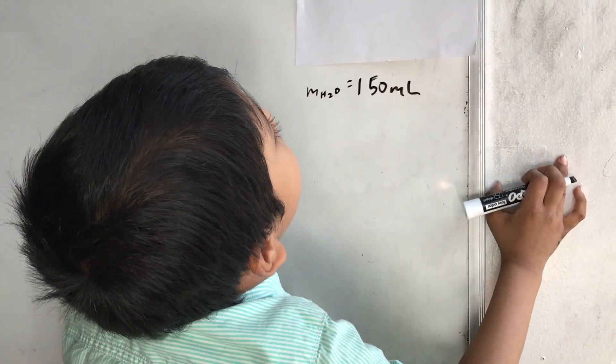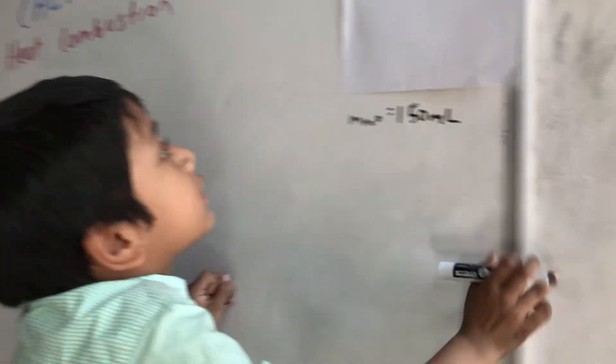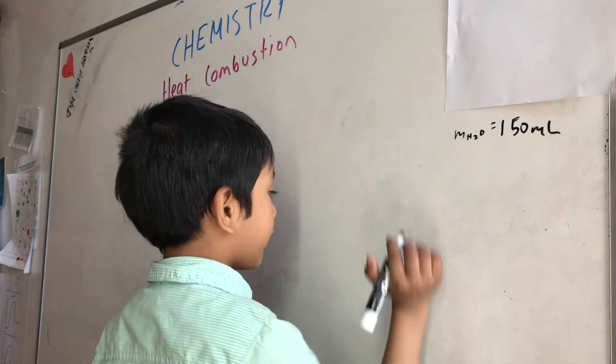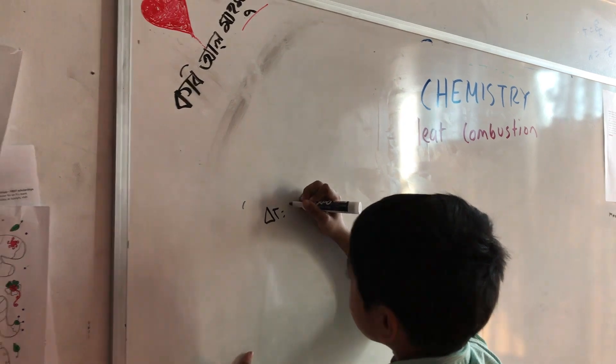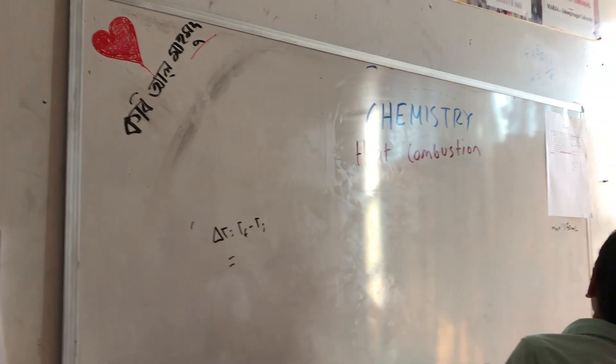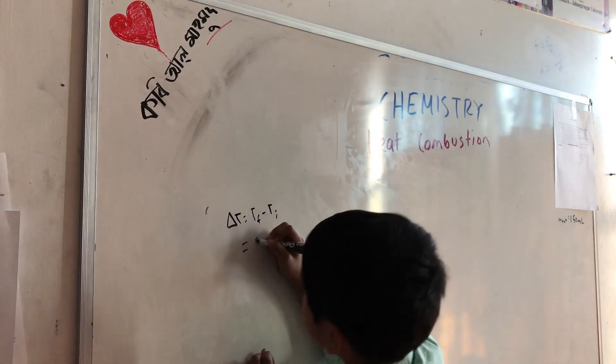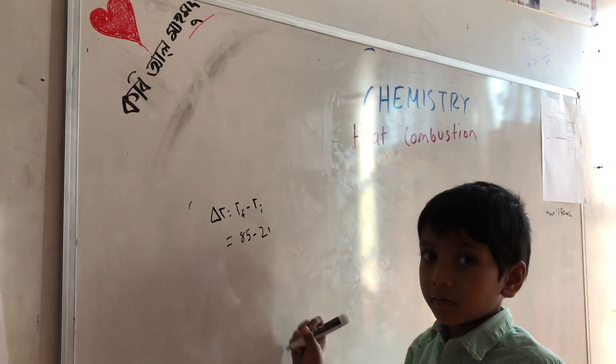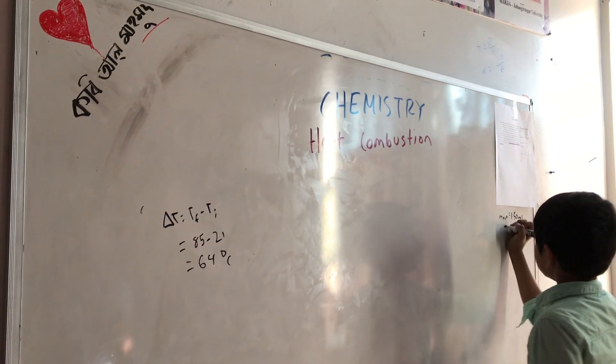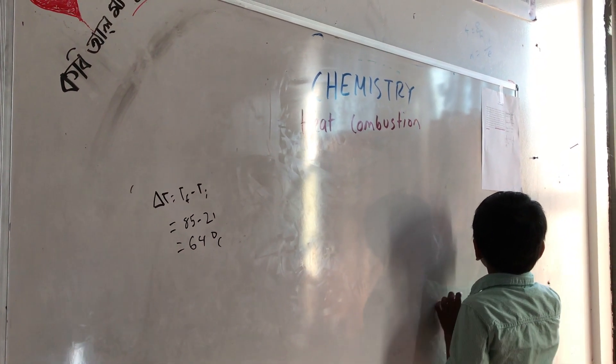The initial temperature is 21 degrees Celsius and the final temperature is 85 degrees Celsius. To find the change of temperature, delta T equals T final minus T initial. So T final is 85 degrees Celsius minus T initial 21 degrees Celsius. Now we know the change of temperature in the water is 64 degrees Celsius.